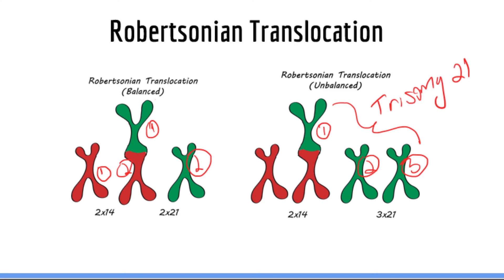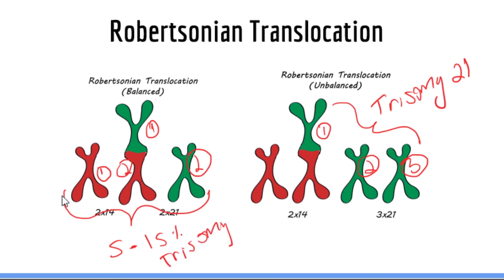The reason this occurs is because of the way that chromosomes are distributed during meiosis and gametogenesis. You do not need to understand the full details of chromosome segregation in people with a Robertsonian translocation. However, what you need to remember is that people with a balanced 14;21 Robertsonian translocation have a 5 to 15% risk of having an offspring with Down syndrome, meaning a 5 to 15% chance of having a child with trisomy 21.